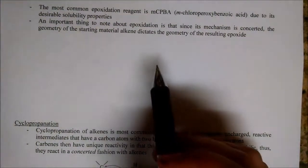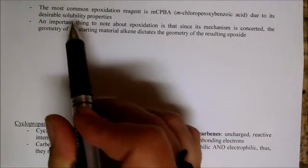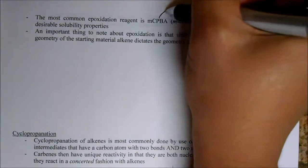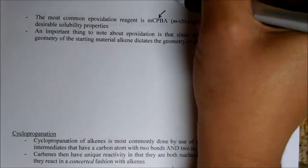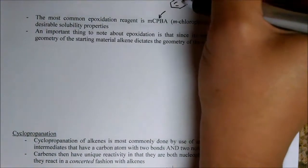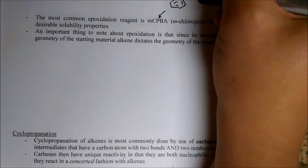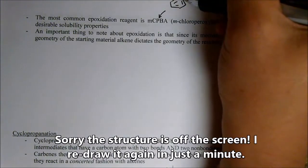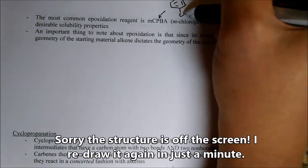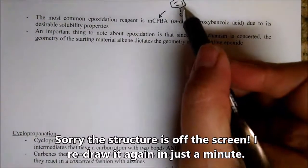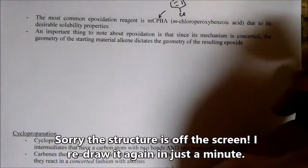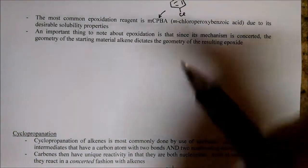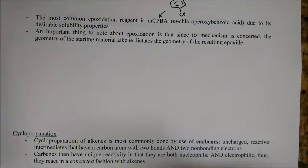The most common epoxidizing agent is MCPBA — meta-chloroperoxybenzoic acid — and that's because it's got really nice solubility properties; it's soluble in lots of things. It's a nice white powder, so you just weigh it out and add it to your reaction. MCPBA has our peroxyacid linkage with a benzene ring bearing a meta-chloro substituent. This is what I'll often write to mean epoxide formation.